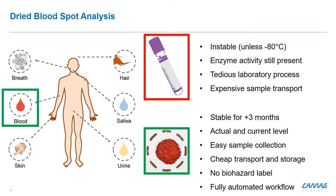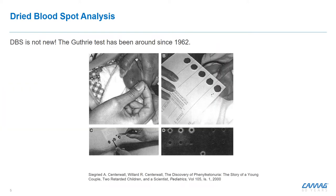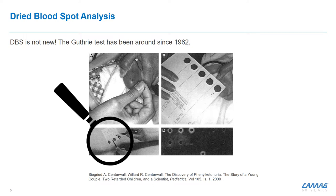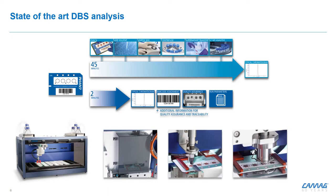Within the laboratory, we have fully automated processes to do the analysis. Dried blood spot analysis is nothing new — the first routine application goes back to 1962, where they punched out disks and then transferred them into a vial for extraction. We took this process and automated the whole workflow, so instead of punching these disks, we directly elute from the filter paper card into the LC-MS instrumentation or into a 96-well plate or vial.